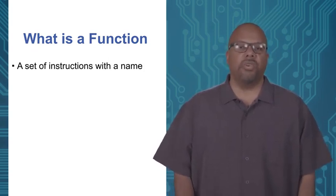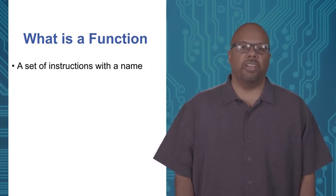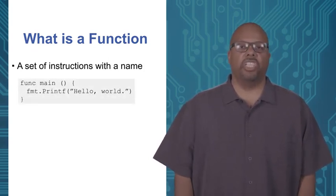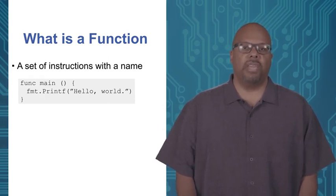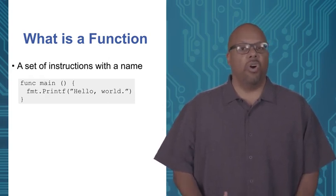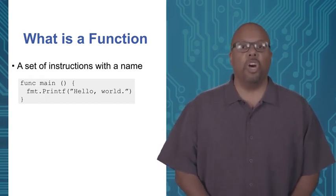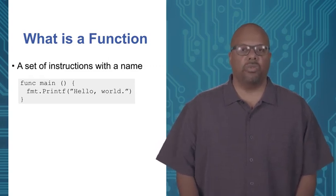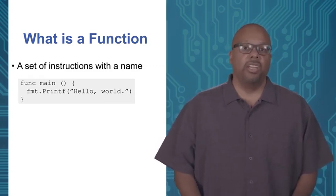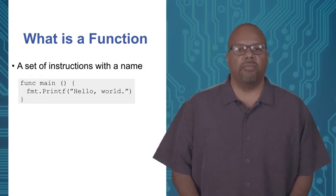We can see this first function, main. Func main — we're defining a function, and that's its name, main. All of our programs so far have a main. In fact, all programs in Go have to have a main function — that's where execution starts. So there's always at least this function main.